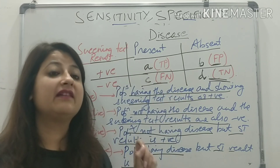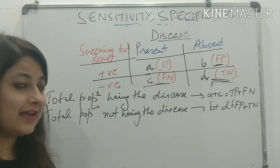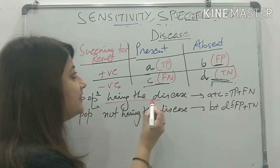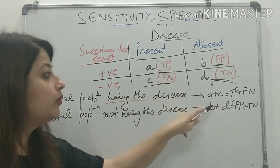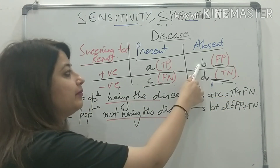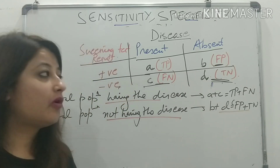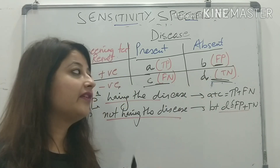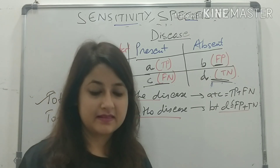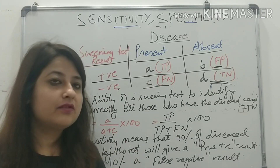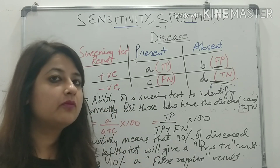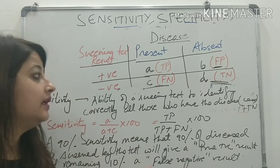From this, we conclude that the total population having the disease is A plus C — true positive plus false negative — and the total population not having the disease is B plus D, which equals false positive plus true negative. Now let us try to understand the results of a screening test. When we measure validity, it is given by two most important components: sensitivity and specificity.